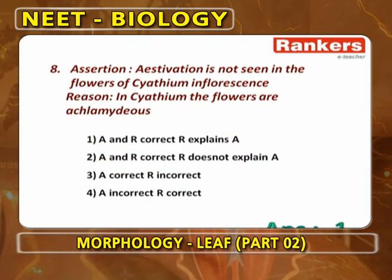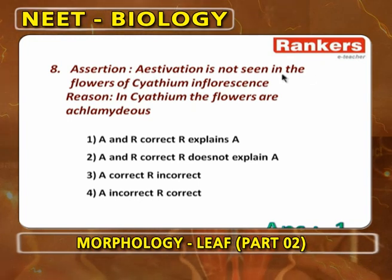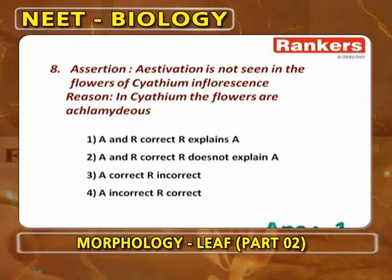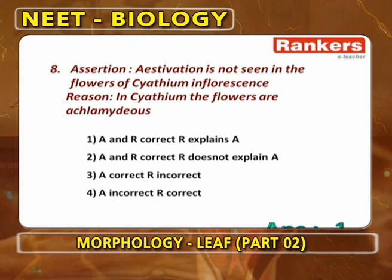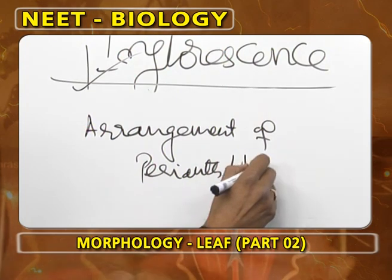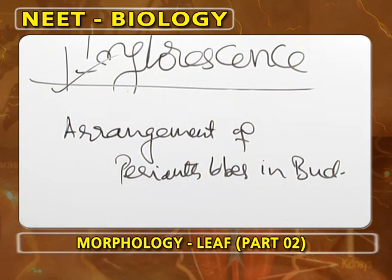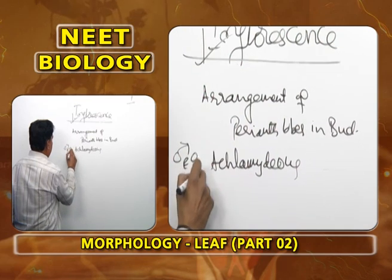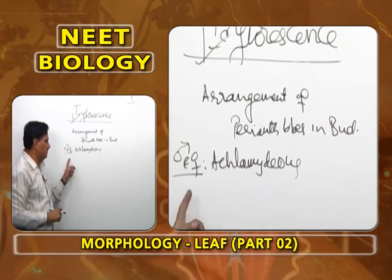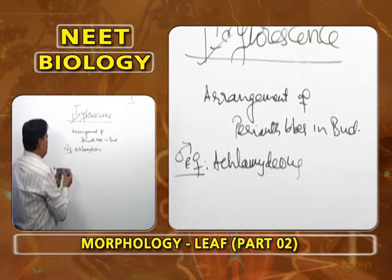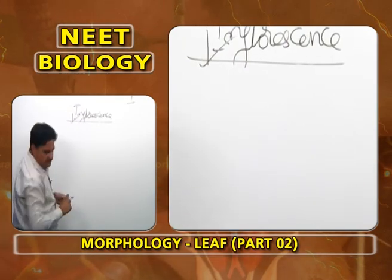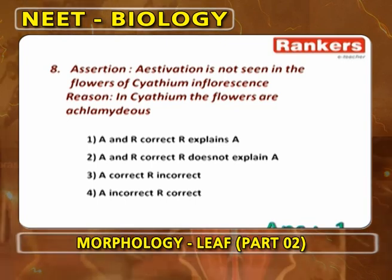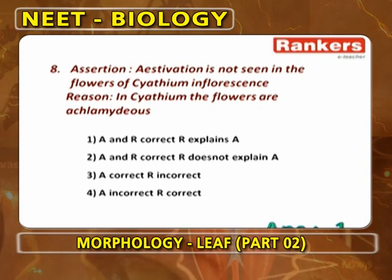Next assertion: estivation is not seen in the flowers of cyatheum inflorescence. Reason: in cyatheum the flowers are achlamydeous. Estivation is the arrangement of perianth lobes in bud condition. In cyatheum, male and female flowers are achlamydeous — they do not possess calyx and corolla. If calyx and corolla are absent, there is no question of studying estivation. So both A and R are correct, and R perfectly explains A.